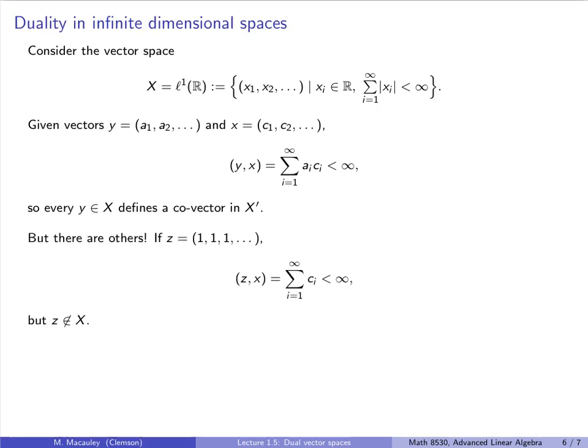So in other words, every vector in L1 of ℝ defines a co-vector or a linear function. However, there are other functions. So let's take this vector Z of (1, 1, 1, 1, etc.). That is certainly not in this space, but it defines a linear scalar function. So you can still take the scalar product of that with X. And if you do that, you just get the sum of the entries of X. And from calculus, we know that any sequence that is absolutely convergent is just convergent. And so that is finite.